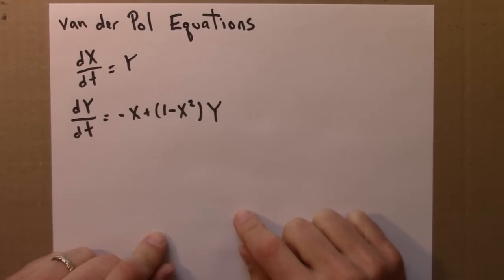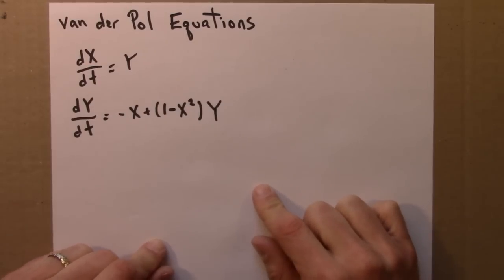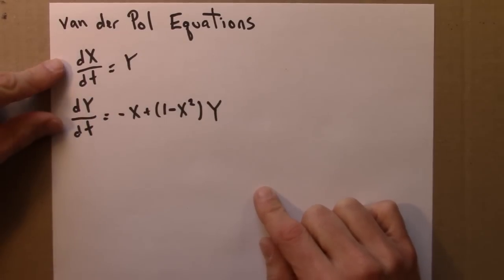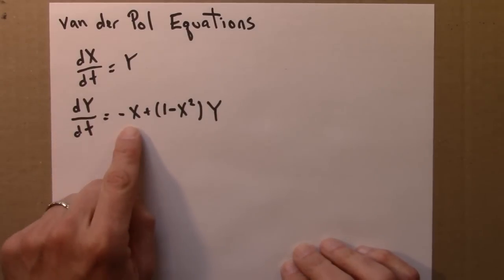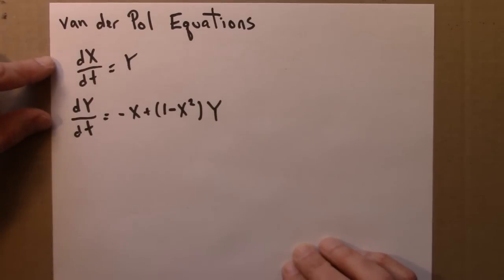There's one more example I'd like to discuss because it will introduce us to a new type of behavior. And it's a system of equations known as the van der Pol equations. Here they are. dx/dt equals y. dy/dt equals minus x plus 1 minus x squared times y. So it's a two-dimensional differential equation like we've been studying before.